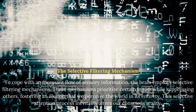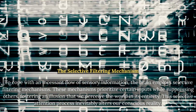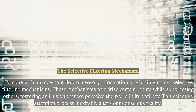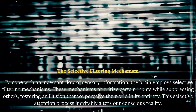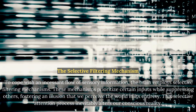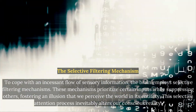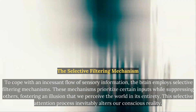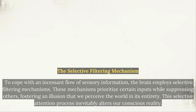To cope with an incessant flow of sensory information, the brain employs selective filtering mechanisms. These mechanisms prioritize certain inputs while suppressing others, fostering an illusion that we perceive the world in its entirety. This selective attention process inevitably alters our conscious reality.